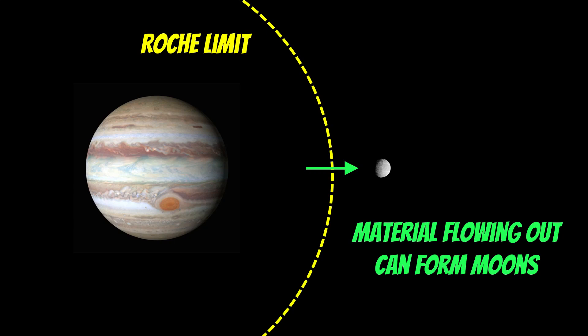Anything that goes the other way and getting closer to the planet is going to get tidally pulled apart and destroyed, which is quite important for Saturn's rings, because it sits at that limit.